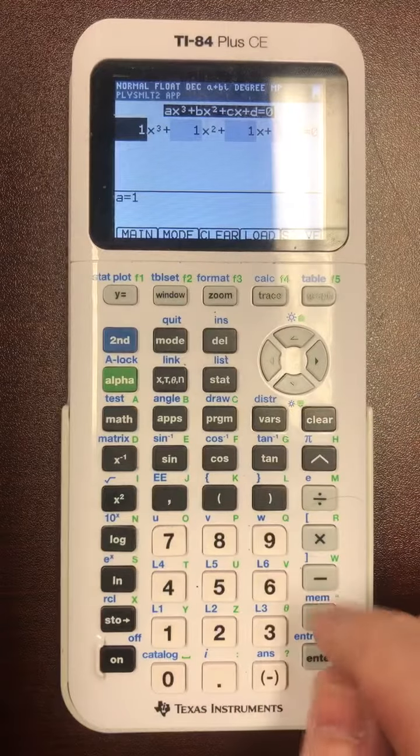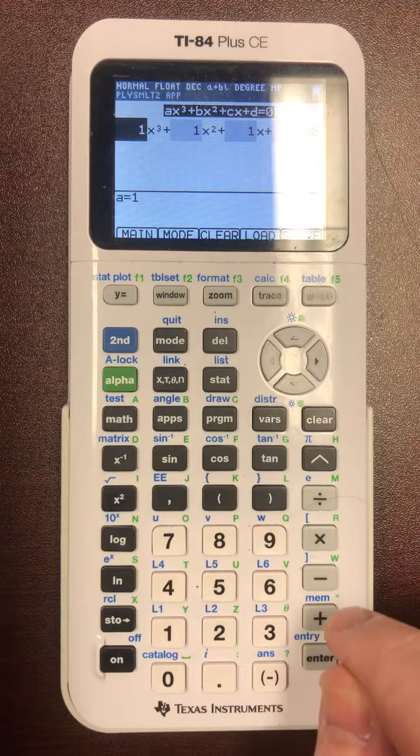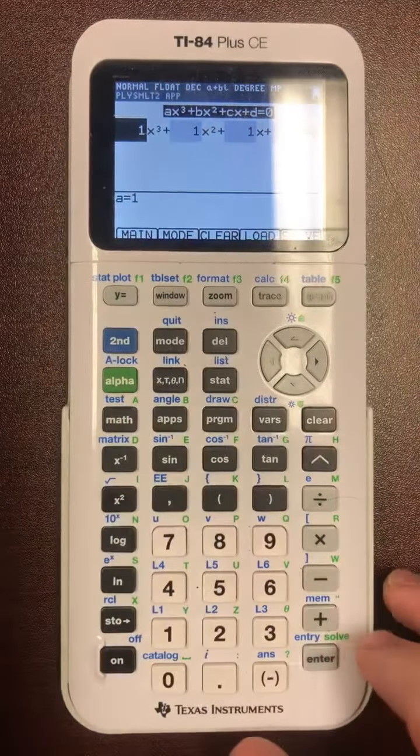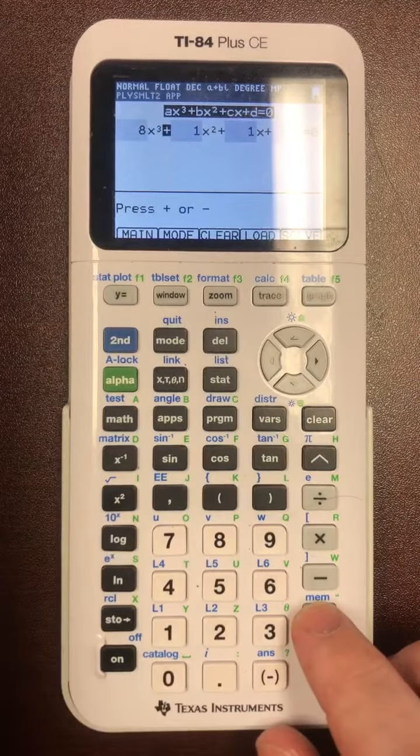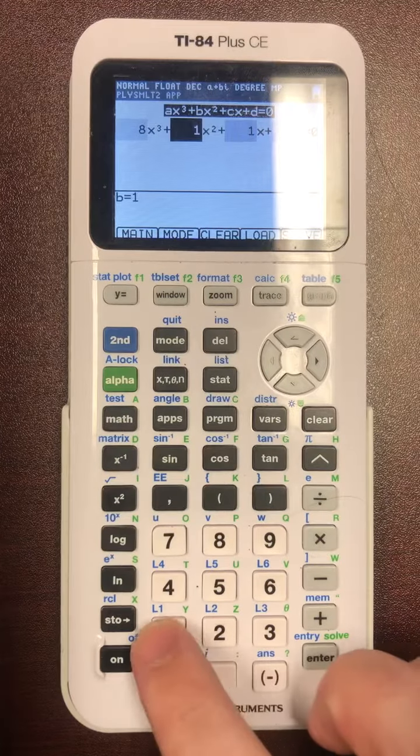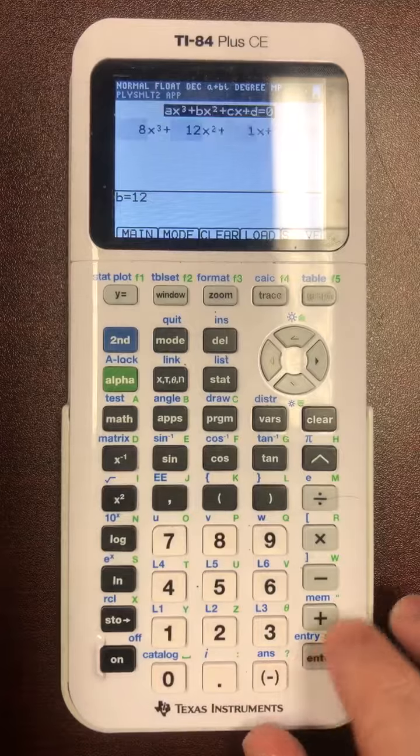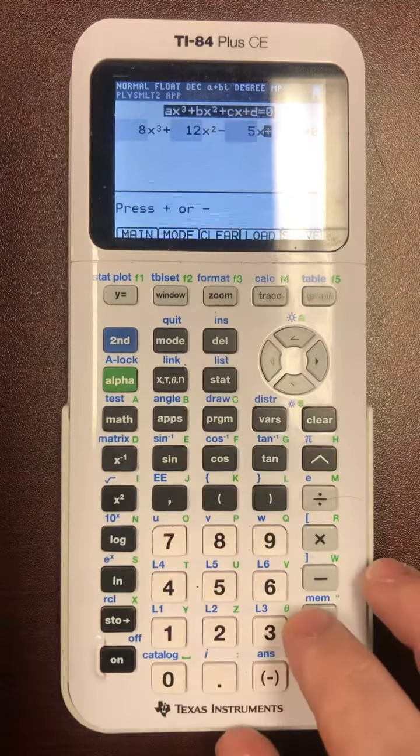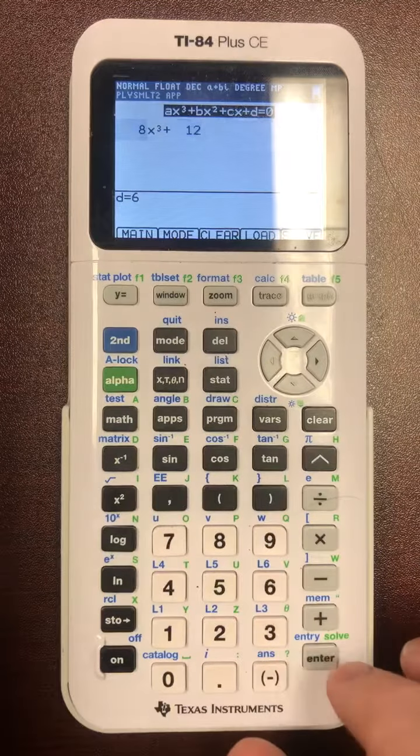Now the key here is it's kind of annoying the way the software is built but you have to do plus or minus in between each coefficient. So you type it in: 8, enter, then it asks you which one plus or minus, plus, enter, 12, enter, minus, enter, 5, enter, plus, enter, 6, enter.